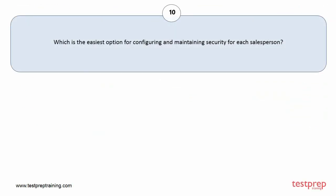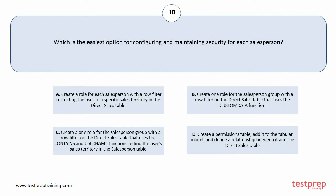Question number 10. Which is the easiest option for configuring and maintaining security for each salesperson? Your options are: A. Create a role for each salesperson with a row filter restricting the user to a specific sales territory in the direct sales table. B. Create one role for the salesperson group with a row filter on the direct sales table that uses the custom data function. C. Create one role for the salesperson group with a row filter on the direct sales table that uses the CONTAINS and USERNAME functions to find the user's sales territory in the salesperson table. D. Create a permissions table, add it to the tabular model, and define a relationship between it and the direct salespeople. The correct answer is option C.